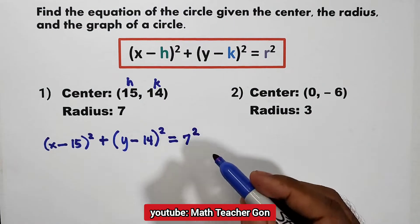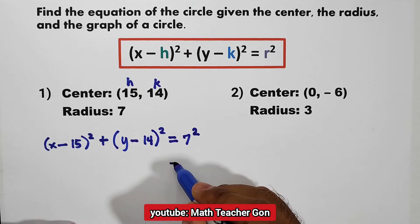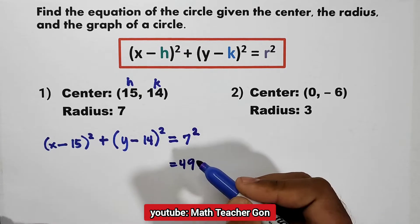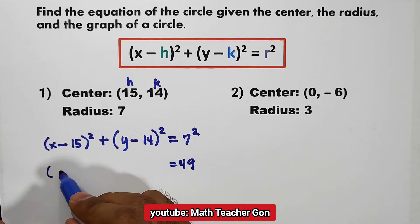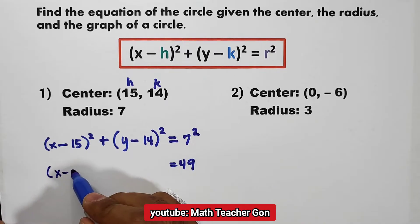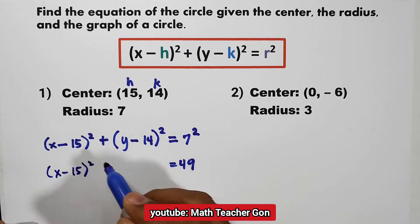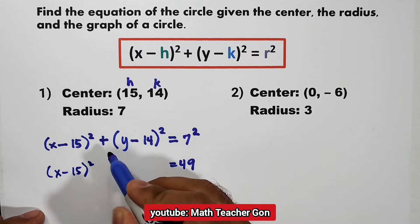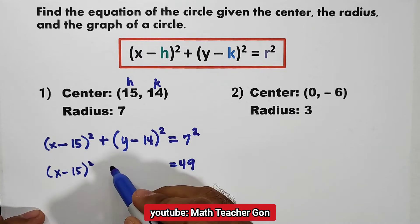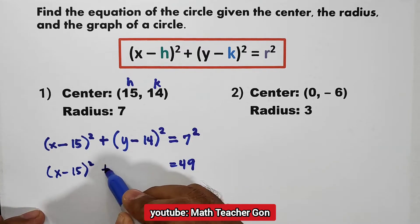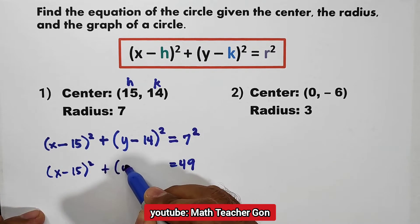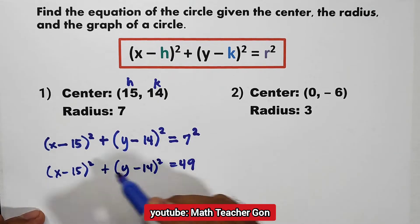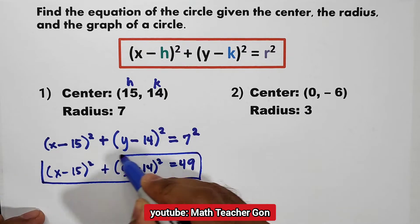Now let us simplify. 7 squared is equal to 49. Therefore, the equation of the circle is (x minus 15) squared plus (y minus 14) squared is equal to 49.